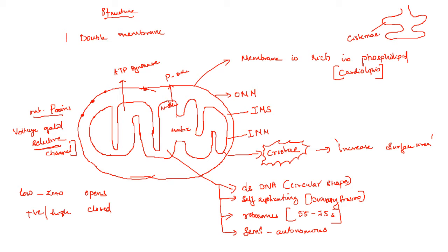The inner membrane has two sides: the side facing the matrix is known as the N-side or matrix side, and the side facing the cytosol is known as the P-side or cytosolic side.